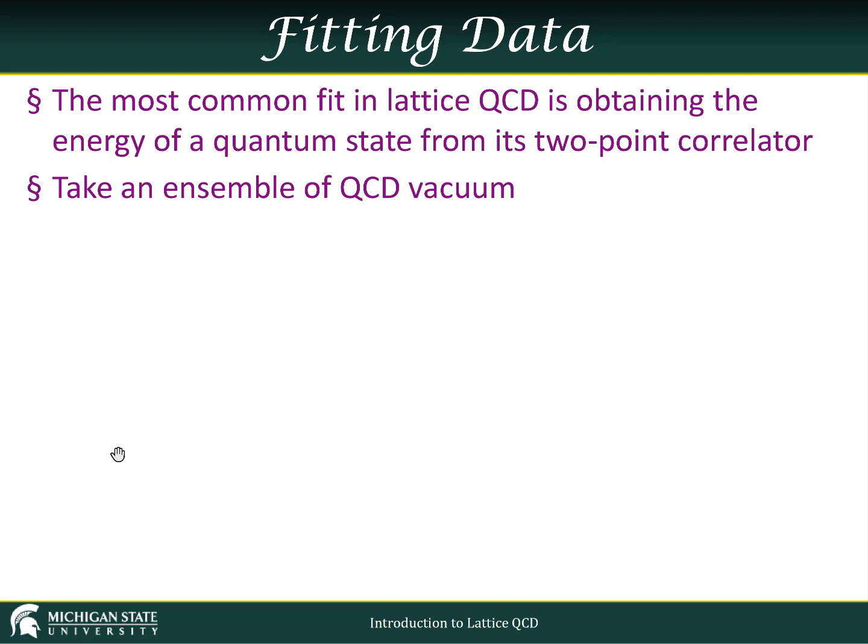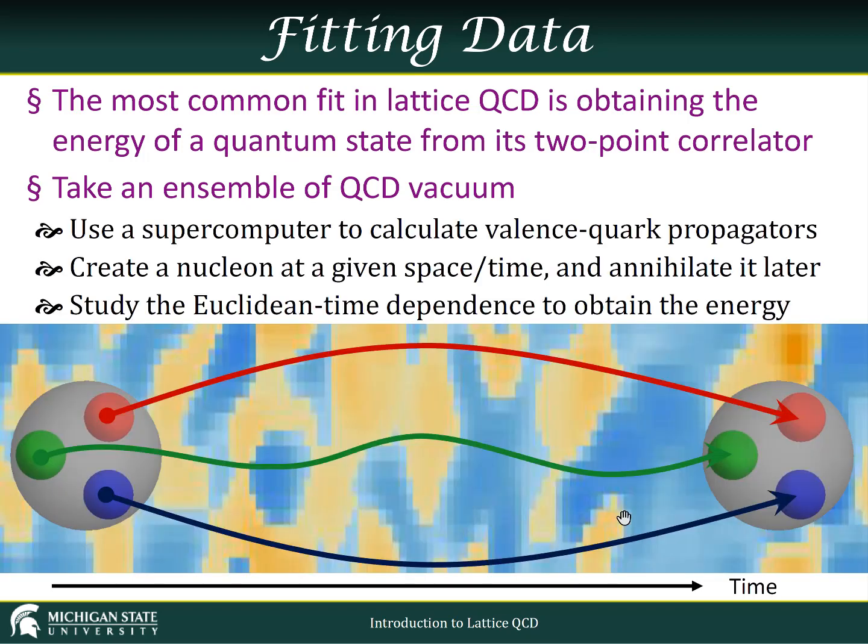The most common fit in lattice QCD is just obtaining the energy of some quantum state from its two-point correlator. So consider taking some ensemble of QCD vacuum, use your supercomputer, you calculate a bunch of valence quark propagators.